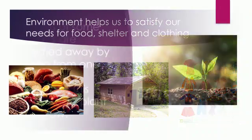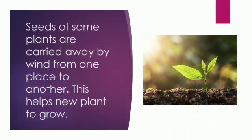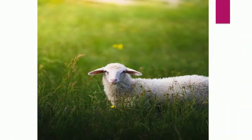Like man and animals, plants also get help from the environment. Seeds or pollen grains of some plants are carried away by wind from one place to another, which helps the plant to grow at different places. Animals like sheep eat leaves and small plants. When the sheep moves to different places, seeds trapped in their fleece or wool fall on the ground. These seeds germinate and develop into new plants. In this way, the sheep and the plants help each other.